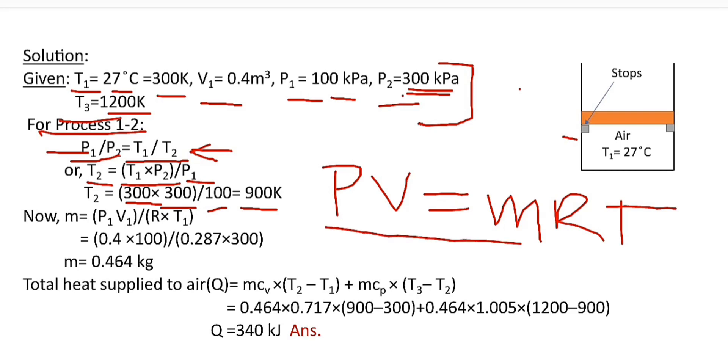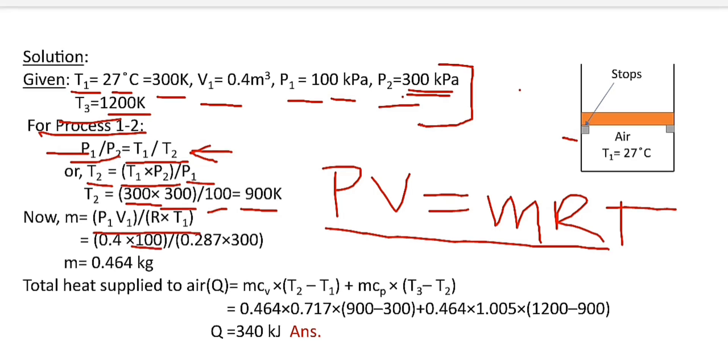From this equation, the value of m, that is mass of air, is equal to P1 V1 divided by R T1. P1 is equal to 100, V1 is equal to 0.4, R is 0.287, and T1 is 300.